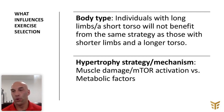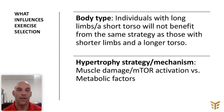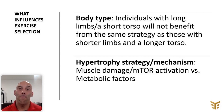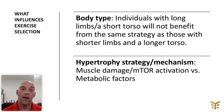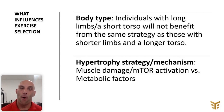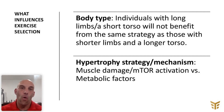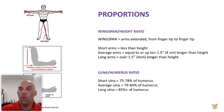Just to briefly recap what we've been covering in this series: we've covered back, chest, and legs. Today it's arms. Body type individuals with long limbs and a short torso will not benefit from the same strategy as those with shorter limbs and a longer torso. Also, depending on the mechanism you are using to trigger muscle growth — muscle damage and mTOR — that will require heavier loading and full range of motion movements where the muscle is still under load when being stretched. That requires a different exercise strategy than the metabolic factor stimulus, which relies mostly on getting that maximum pump, burn, and lactate accumulation. Metabolic stimulus is better used with isolated movements where you can keep tension on the muscle, with load and stretch not being as important.